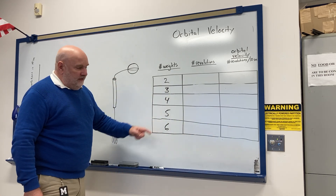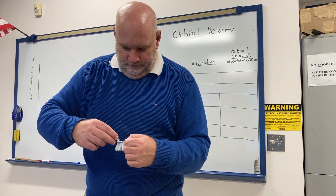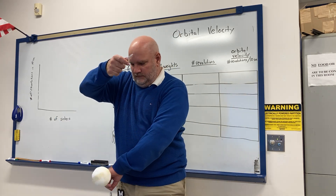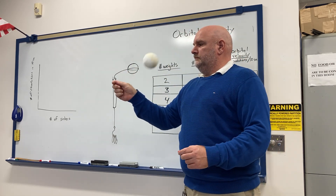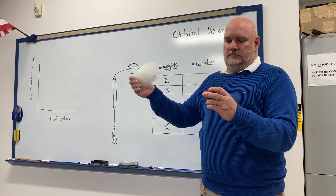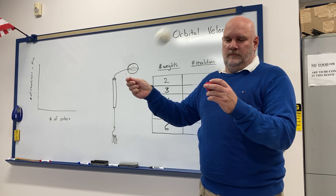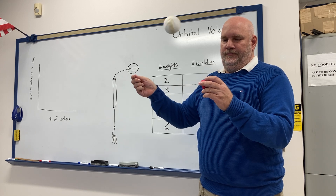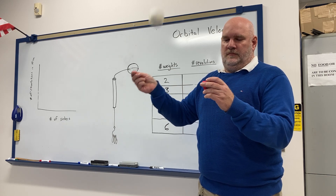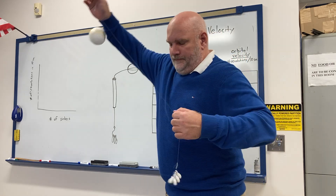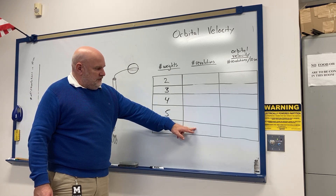And now for the last one, I'm putting six sinkers on the bottom. However many revolutions you counted, put that number in the table.